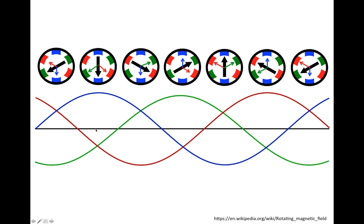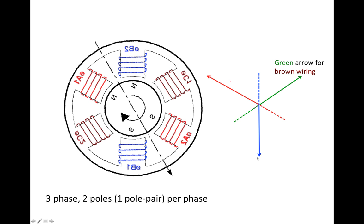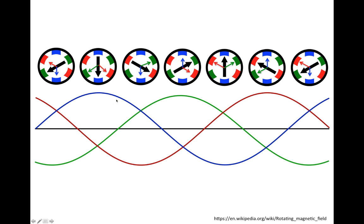At the second time point, the current in the blue phase reaches positive maximum, while the currents in the green and red phases are at half of maximum strength in the negative direction. Drawing the arrows again — the blue arrow at full length in the positive direction, and red and green arrows at half strength in the negative direction — the combined vector sum gives another resultant black arrow. Comparing the two black arrows, the combined magnetic field has rotated 60 degrees counterclockwise.